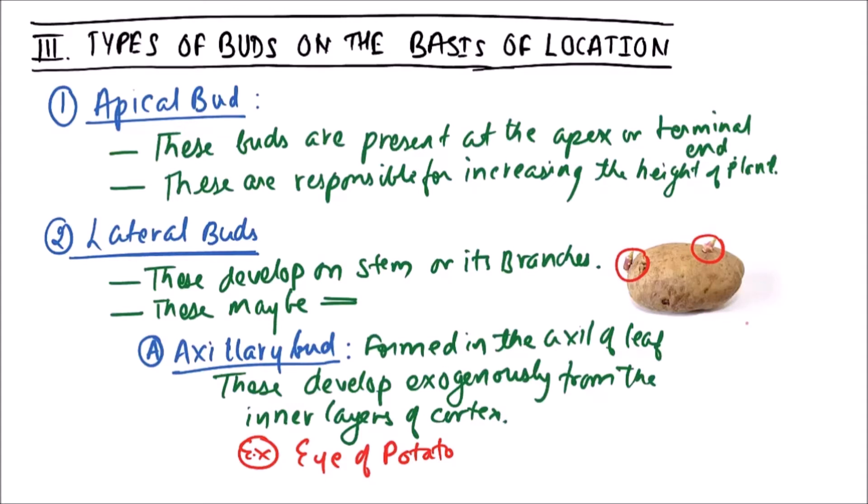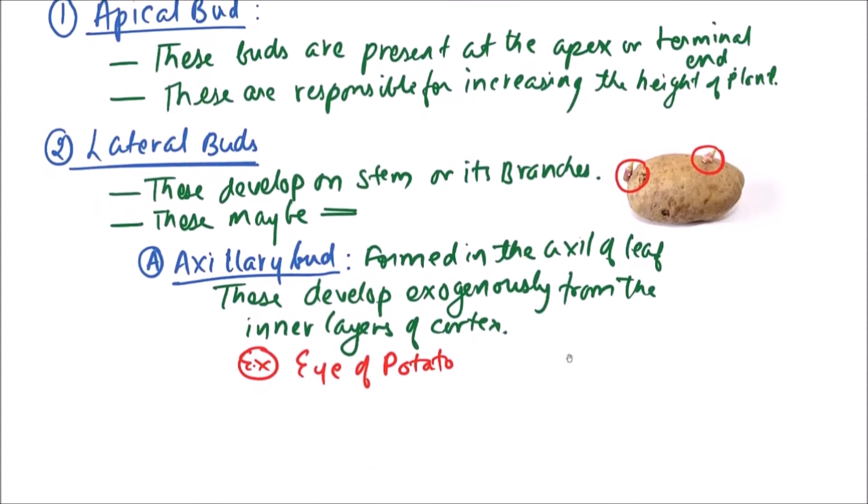Second type is accessory buds. These develop on lateral sides of axillary buds.